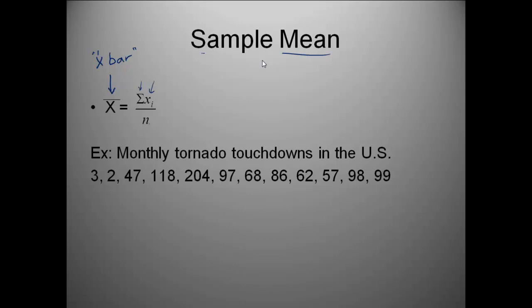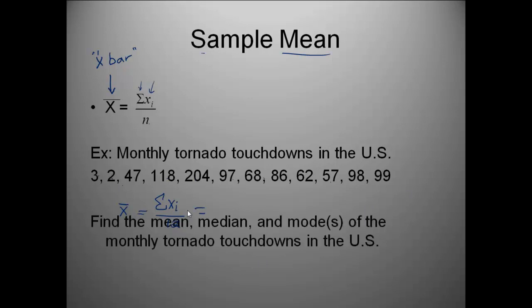So here's an example. It's monthly tornado touchdowns in the U.S. And there's all my data. So if I wanted to find the mean, the sample mean, because this is only for one year, I would use x bar. x bar is equal to sigma notation with that x sub i divided by N. Well now my N is going to be 12 because there's 12 observations. So I still have to go through the same steps. I still need to add all of those numbers together and then divide by my 12. So this question wants me to find the mean, the median, and the modes of the monthly tornado touchdowns in the U.S. So using this idea of our formula for sample mean, see if you can find each of these three things.